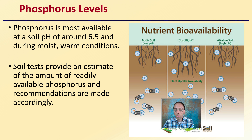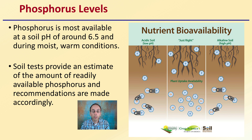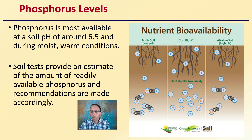When looking at phosphorus levels, phosphorus is most available in soil at a pH around 6.5 and during moist, warm conditions. Soil tests provide an estimate of the amount of readily available phosphorus, and recommendations are made accordingly. The goal is that if soil is very acidic or very alkaline, a lot of that phosphorus is locked up. With the pH just right, a lot of the phosphorus is plant available.